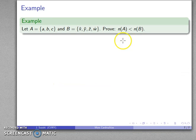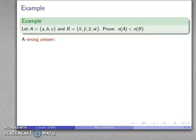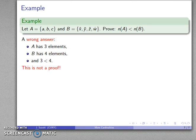Let's take two sets — A is this thing, B is this thing — and I want to prove that the cardinality of A is strictly less than the cardinality of B. Here's a wrong answer: 'A has three elements, B has four elements, three is less than four.' This is not a proof because there is nothing that refers back to the definition of unequal cardinalities.